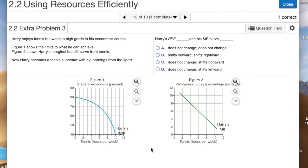Okay, Harry enjoys tennis but he wants a high grade in his economic course. That's the trade-off that he's facing here. We have these same two figures—the PPF that shows his marginal cost and the limits to what he can achieve, and then the marginal benefit curve from playing tennis. But suppose now that Harry becomes this tennis superstar and he's got huge income earnings from the sport. To answer the question here: what happens to Harry's PPF and what happens to his marginal benefit curve? Well, the limits to what Harry can achieve in terms of the trade-off between his econ grade and his playing tennis, that hasn't changed.